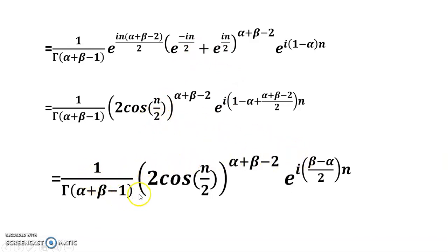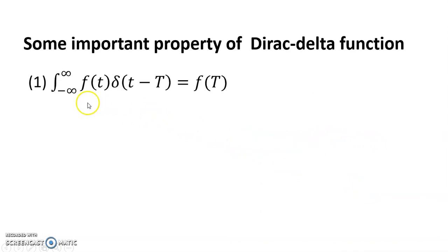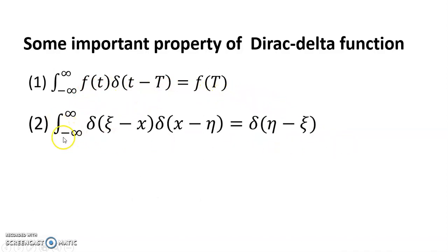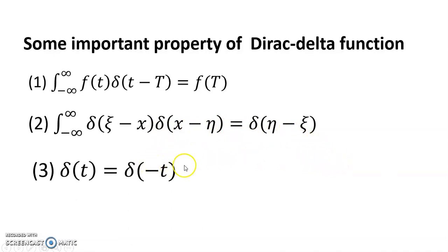We get 1 over gamma(alpha plus beta minus 1) times this value. Some important properties of the Dirac delta function: property 1 is the integral from minus infinity to infinity of f(t) delta(t minus T) equals f(T). Property 2 is the integral of delta(xi over zeta minus x) times delta(x minus eta) equals delta(zeta minus eta). Also, delta(minus t) equals delta(t). Thanks for watching.